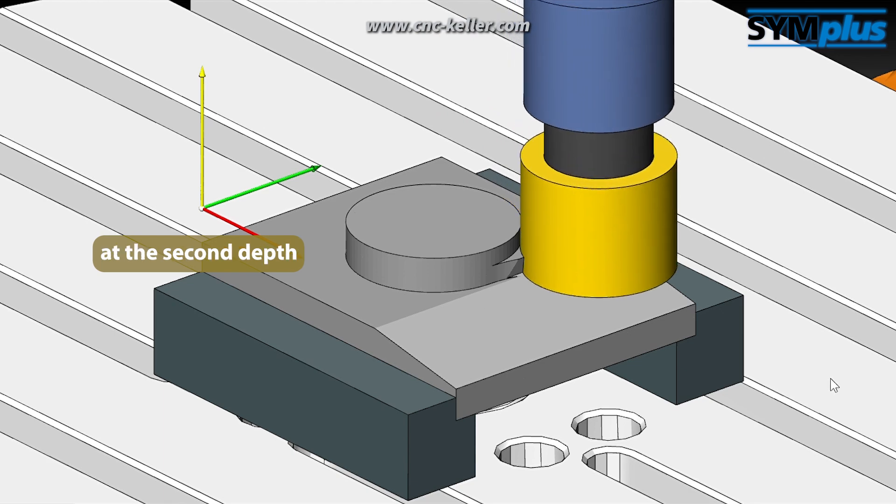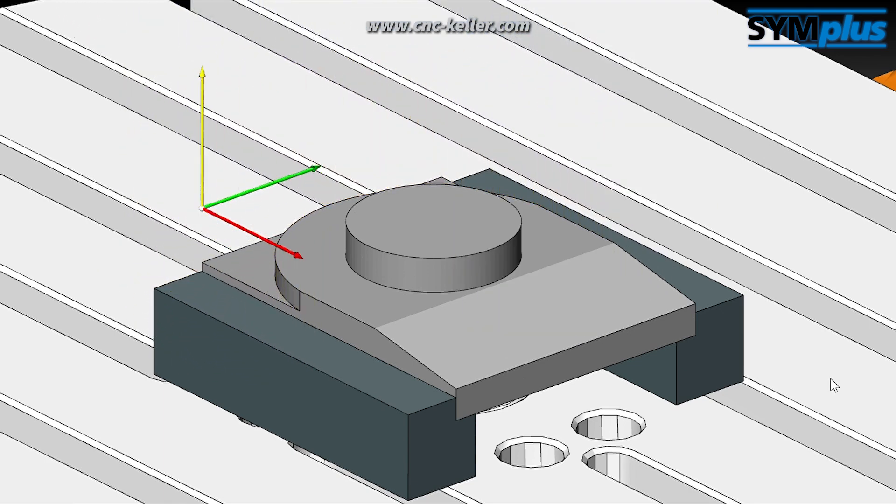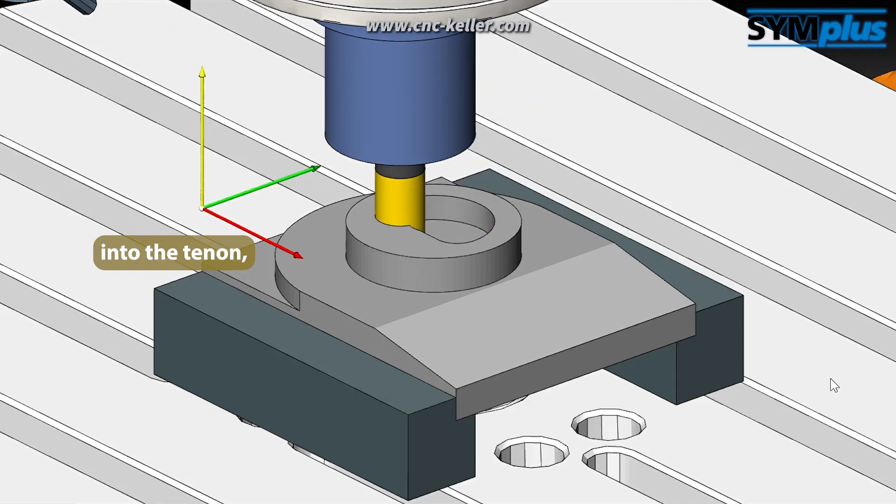The whole process is repeated at the second depth with G23. A circular pocket is milled into the tenon, creating a ring.